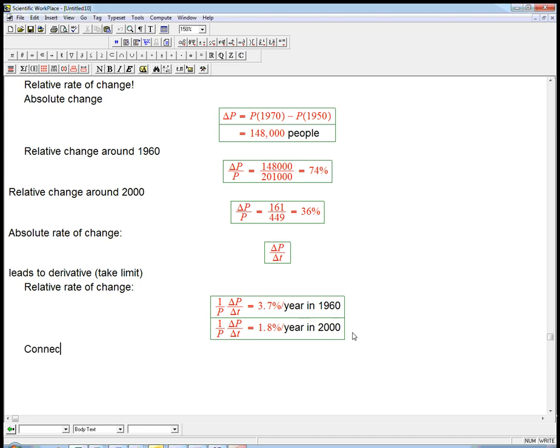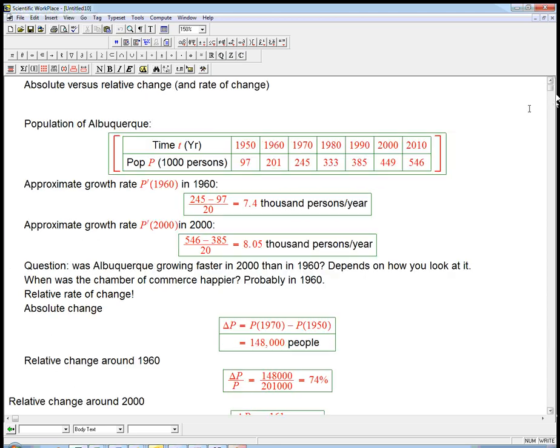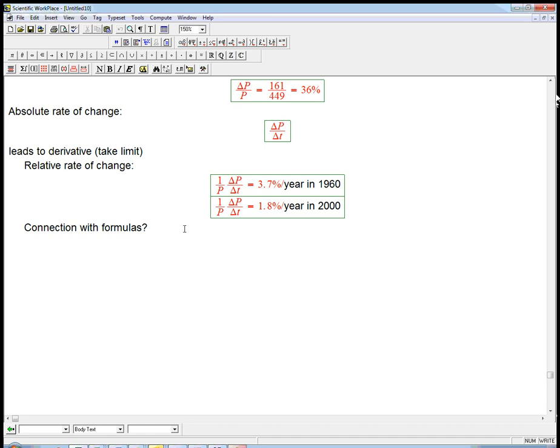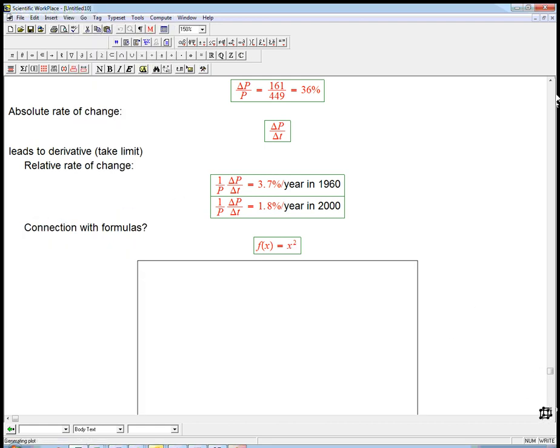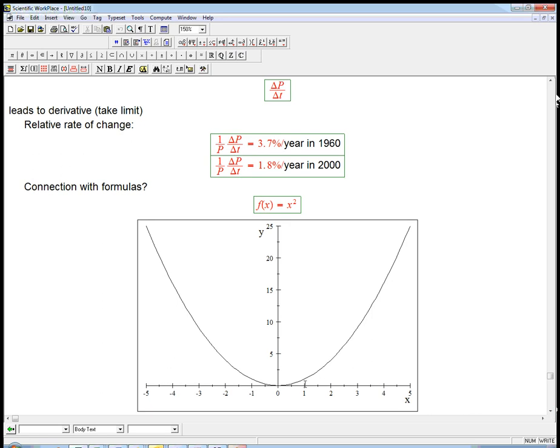So what about a connection with the formulas? This is going back to old school rates of change where we just had data and we were doing secant line calculations. What about the connection with the formulas? Well, let's just look at a really simple function, f of x equals x squared. Let's graph that real quick. And think about how the slopes change. Comparing the slope here at 1 to the slope out here at like 4, we can see the slope is getting bigger. But the function's getting bigger too. If this was the population curve for some city, would this be something where the growth rate is actually getting faster, or the relative growth rate getting faster or getting slower?